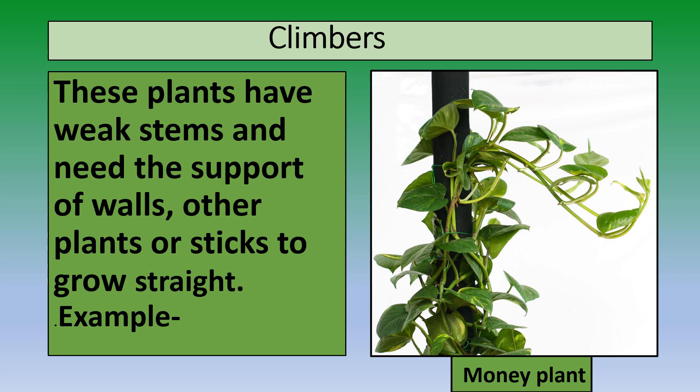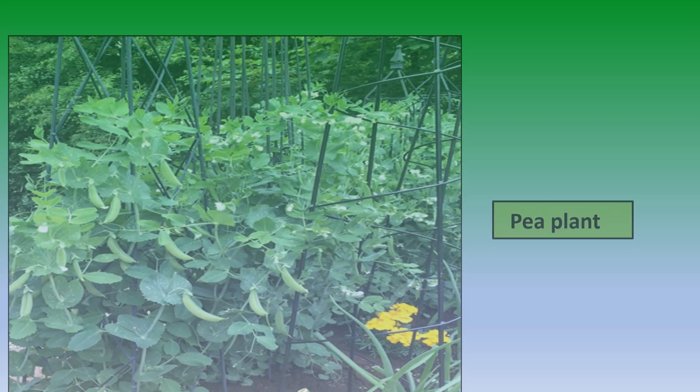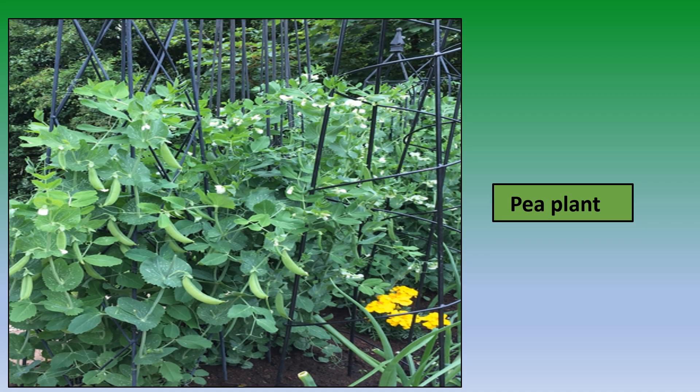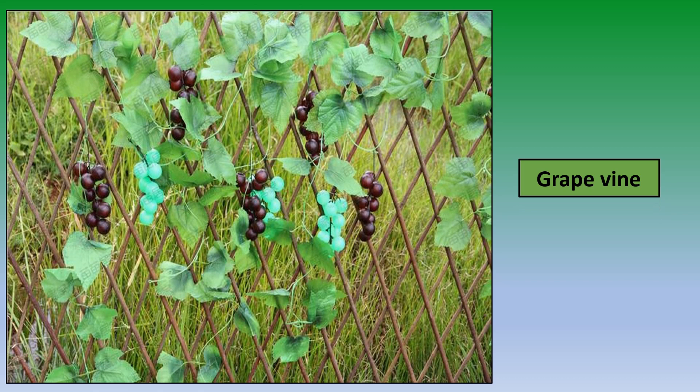Now let's have a look at some more examples of climbers. Climbers are plants which have a weak stem and need support to grow straight.